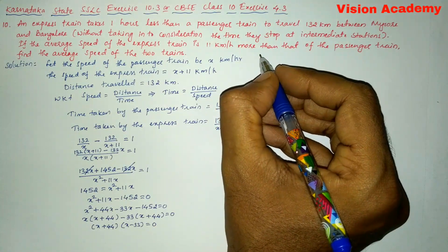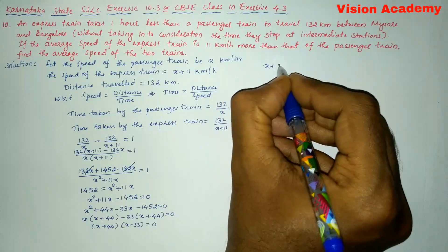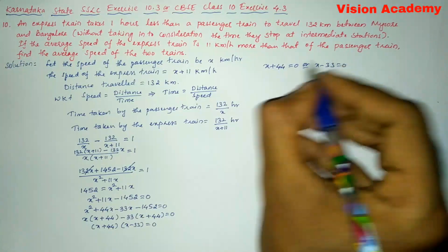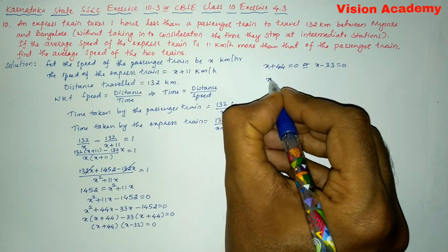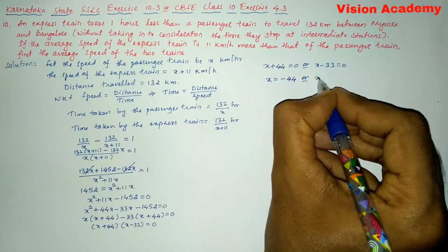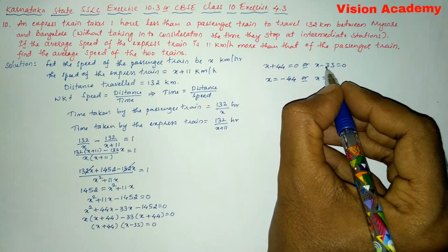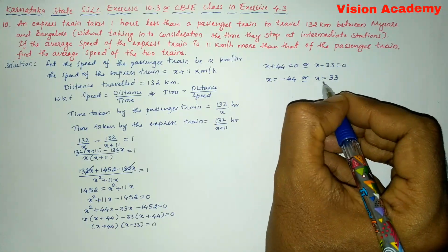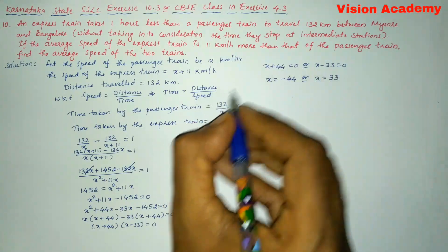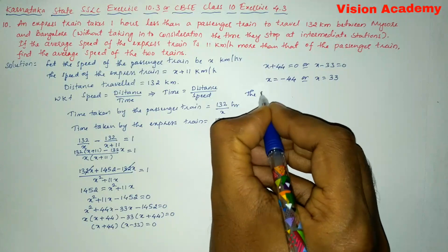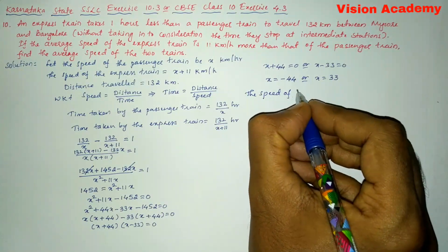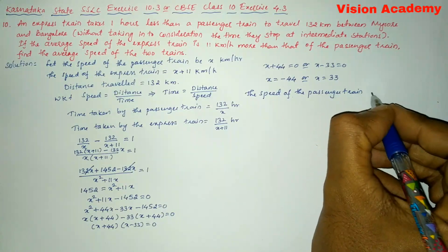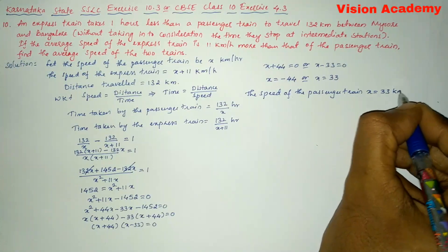We can write this as x plus 44 equals 0 or x minus 33 equals 0. Solving: x equals minus 44 or x equals positive 33. Since speed cannot be negative, we reject the negative value and take x equals 33. So the speed of the passenger train is 33 kilometers per hour.